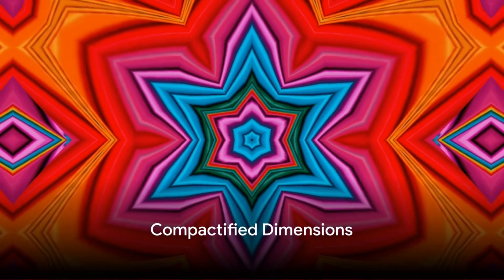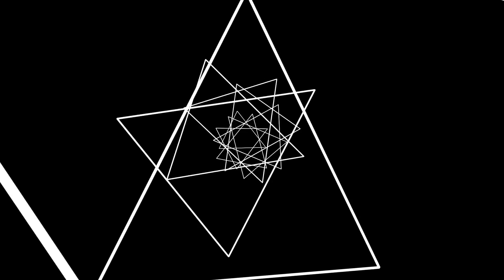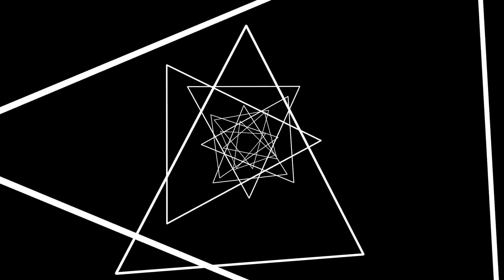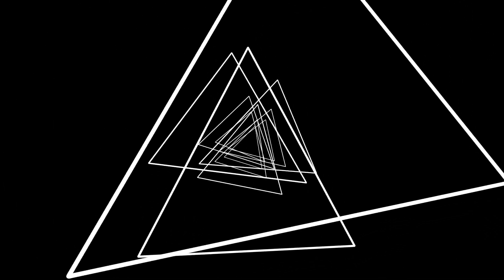Now, you might wonder, why don't we see these extra dimensions? The best explanation string theorists have is that these dimensions are compactified or curled up to such a small scale that they are impossible to detect with our current technology.